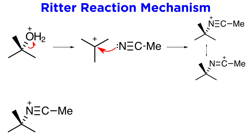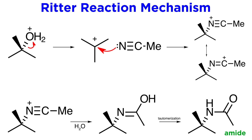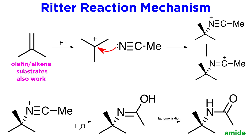This intermediate is very electrophilic, and water will attack this carbon to form the amide. Now we also know that stable carbocations can be obtained by protonation of highly substituted olefins, also known as alkenes, and indeed another formulation of the Ritter reaction operates via olefins as substrates. Again, the key intermediate is the carbocation, which is attacked by the nitrile to produce the expected amide product.